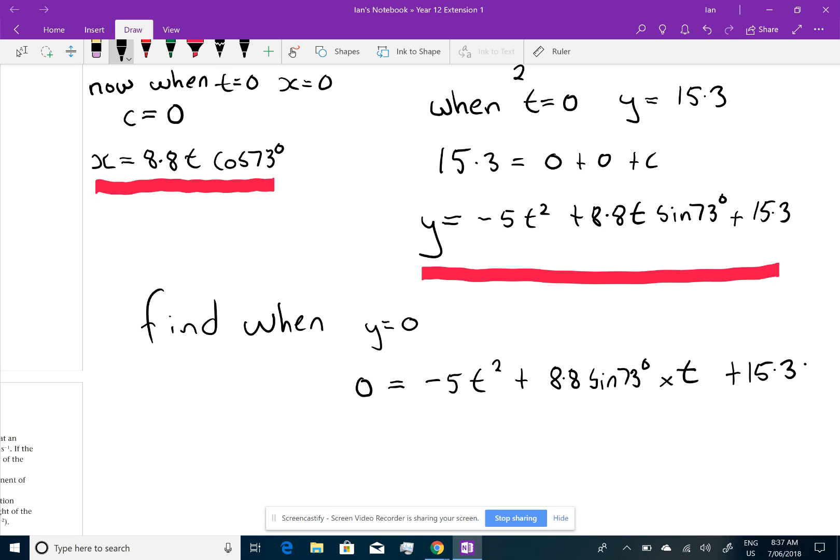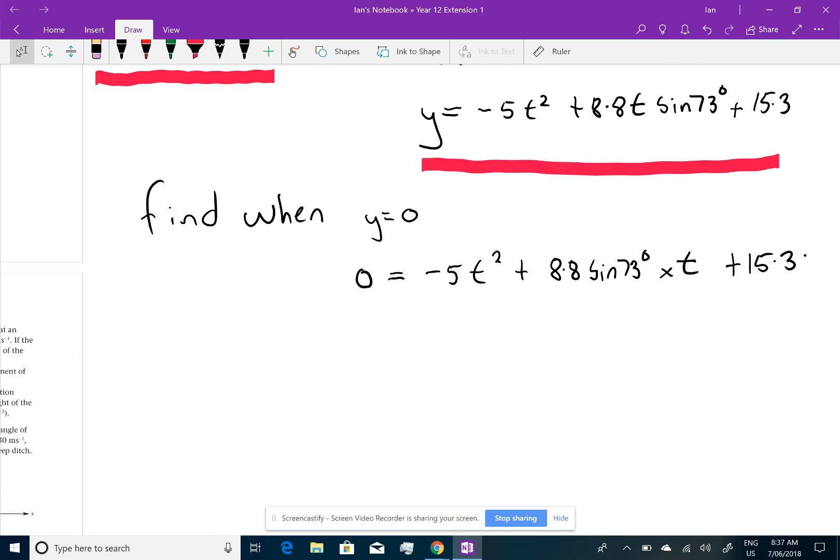Now, this is a quadratic equation. It's a negative quadratic equation, and I'm going to have to find the value of this, because I'm going to use the quadratic formula. 8.8 times sin 73. So, I'm doing this on my calculator, 8.8 times sin 73.